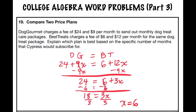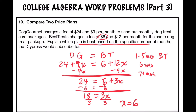That means at 6 months, both plans are equal. We want to know which plan is best based on a specific number of months. For 1 to 5 months, the plan with the cheaper start value of $6 would be better — that's Best Treats. At 6 months, both are equal. At 7 or more months, the higher start plan with a lower per-month charge is better, and that would be Dog Gourmet.